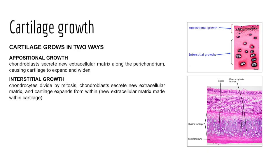Cartilage grows in two ways: appositional growth and interstitial growth — terms we'll also see with bone growth. The key cells are chondroblasts. In appositional growth, chondroblasts on the surface of cartilage just underneath the perichondrium secrete new extracellular matrix, causing cartilage to expand outward and widen. In interstitial growth — more specific to long bone postnatal growth — chondroblasts secrete extracellular matrix so cartilage expands from within, making it longer.